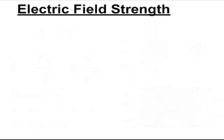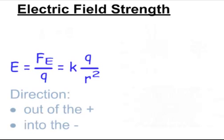Let's come over to electric field strength. Electric field strength is also a vector quantity, and it's equal to KQ over R squared. Electric field strength doesn't require a charge to be there — it can be some random point in space. If there is a charge, you can do the force that charge is feeling over the Q of that charge. The units for electric field strength are newtons per coulomb.